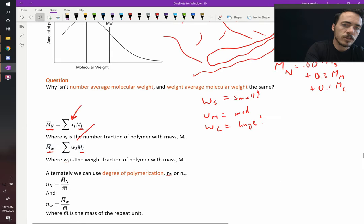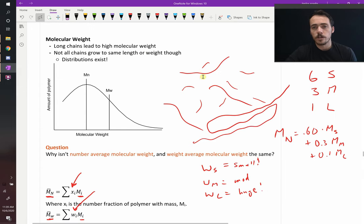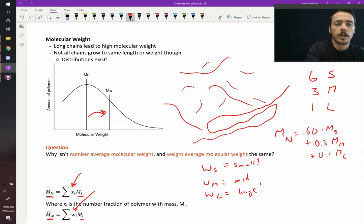But here, this one, you're using W sub I, and that's the weight fraction of the chains in that. And again, even though there's lots and lots of these really small ones, if they don't weigh very much, it's going to give you a much smaller number than, say, 60%. It might be only 6%. Do you see the difference here? Because of that, because you're taking into account the weight of a few really heavy chains, the weight average molecular weight will always be shifted to the right of the number average molecular weight.